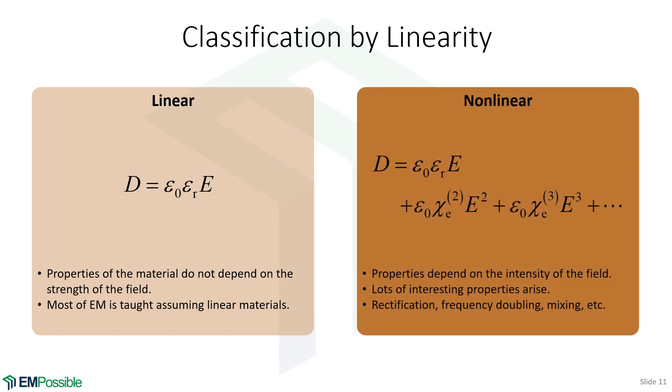Now, with nonlinear materials, notice there's more terms here now in the constitutive relation. We have our standard linear term, but now we have an electric field squared, an electric field cubed. And so as the electric field becomes more intense, the contribution of this term or this other term or any of these other terms becomes more significant. And the material properties now depend on the strength and the orientation of the electric field. And lots of interesting things come out of this. We can rectify waves. We can frequency double, heterodyning and mixing, all kinds of neat things.